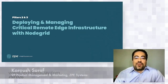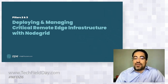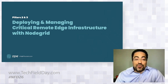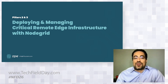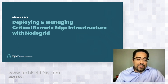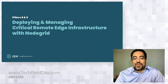In this section, Pillar 2 and 3, this is about deploying and managing critical remote edge infrastructure with Node Grid. It's also about how distributed branch infrastructure gets to be not only managed, but also how we carry the data as well in Pillar 2 and 3.